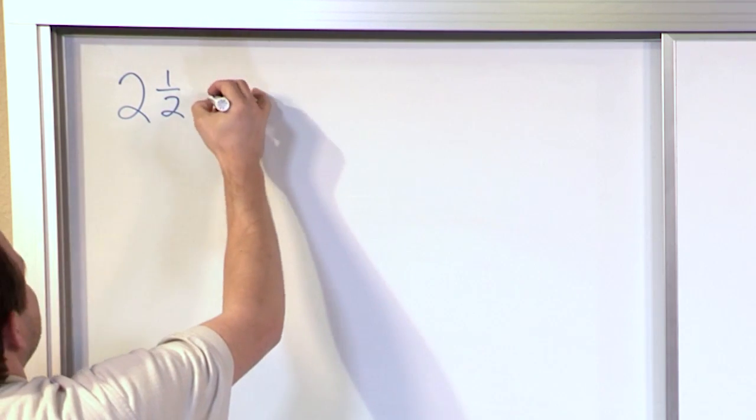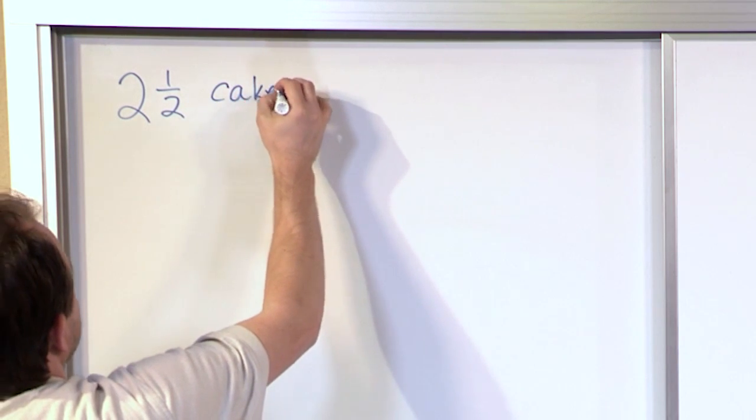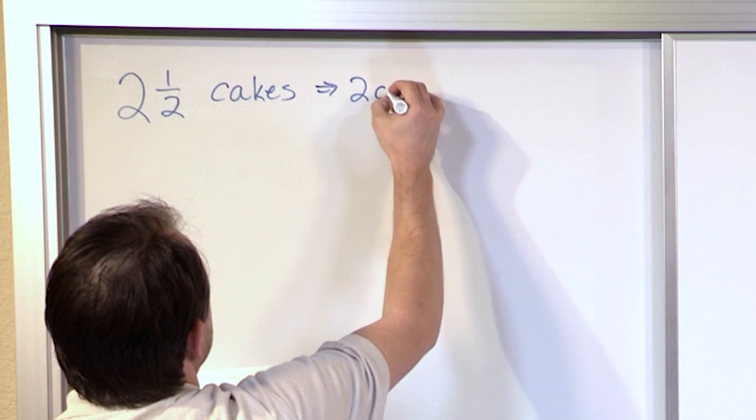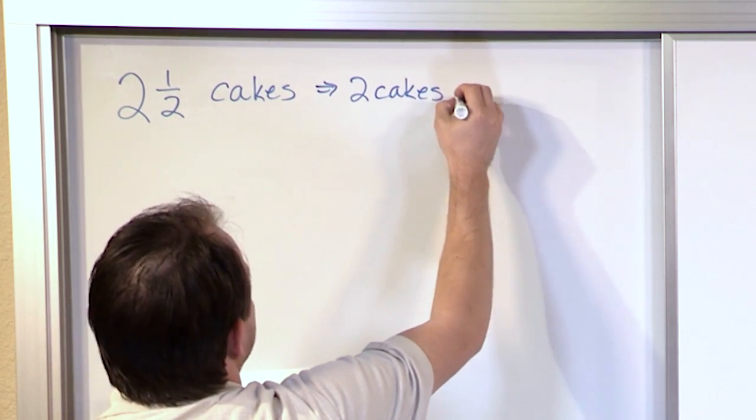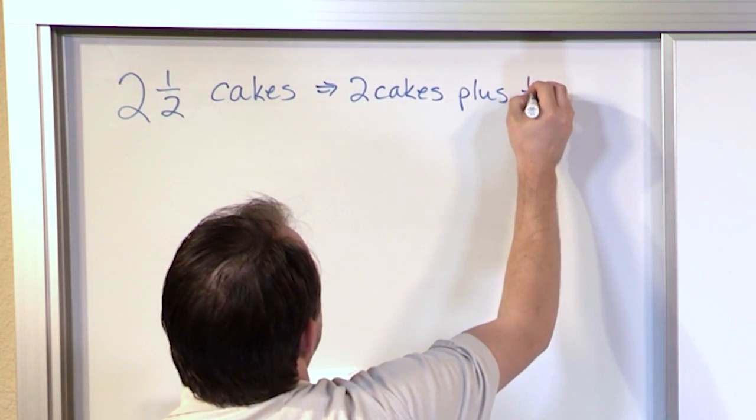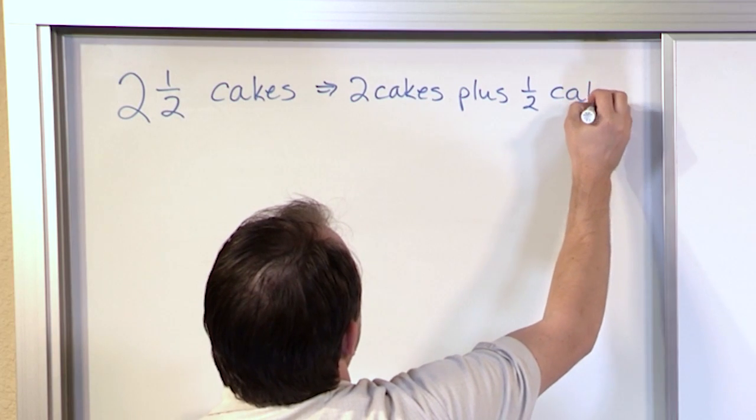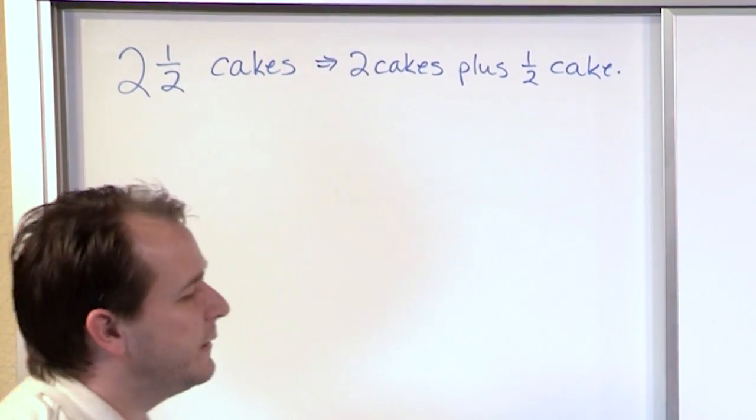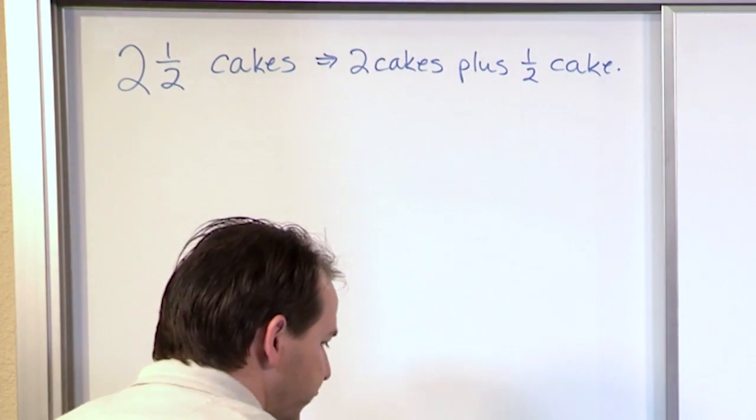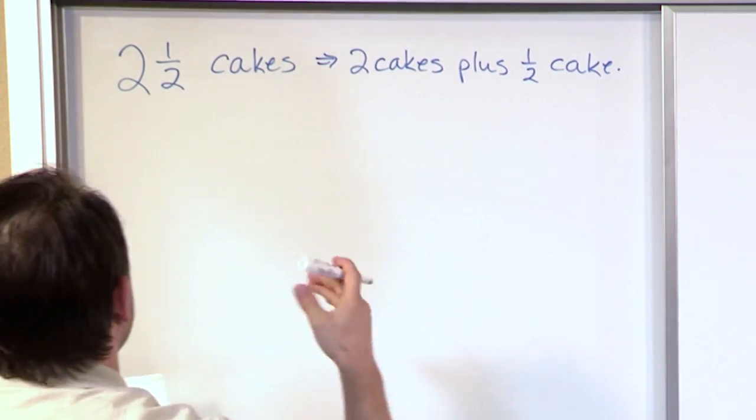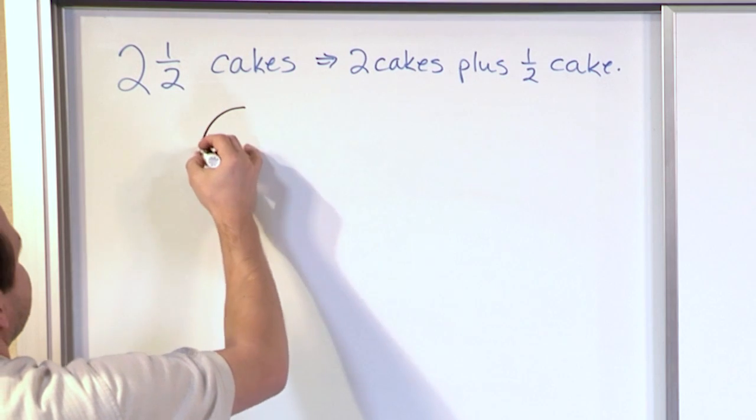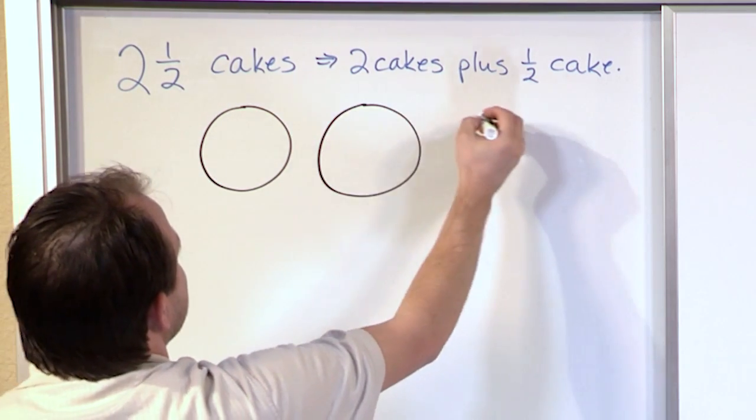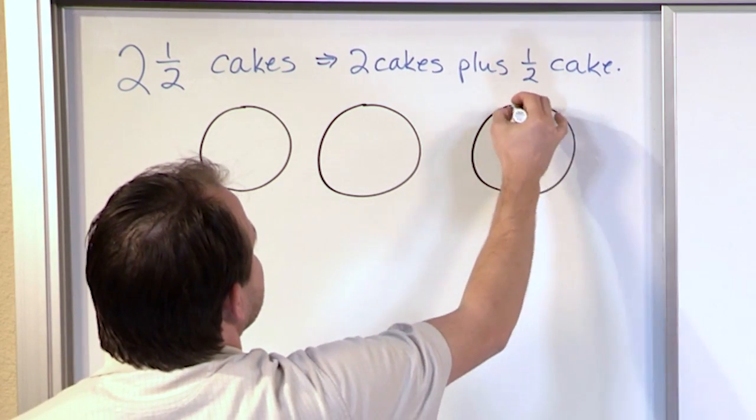So if you have two and a half cakes, let's say, then what you really have is two cakes plus one half cake. So literally in words it means exactly how it sounds. Two and a half cakes mean you have two cakes plus another half. So if I wanted to draw that, just to quickly show you, if I had two and a half cakes, here's cake number one, here's cake number two, here's another cake that I'm going to end up cutting in half.